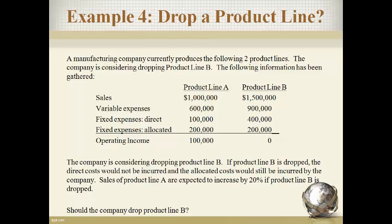Our next decision is whether to drop a product line. Dropping a product line will change the company's total sales, so the contribution margin income statement format is used. The accountant must first sort information by variable and fixed expenses and determine if fixed expenses are directly related to the product or allocated to product lines. Direct costs are only related to the particular product line — if the product line goes away, the cost goes away also. Allocated costs will be incurred by the total company even if the product line goes away; cost allocated to product B will simply move to product A.